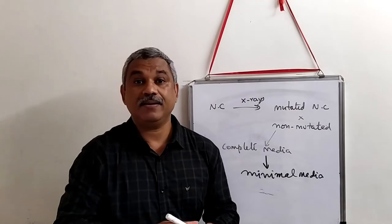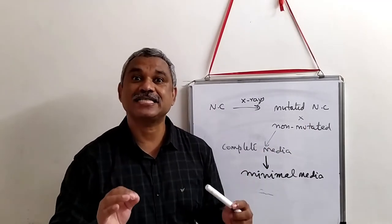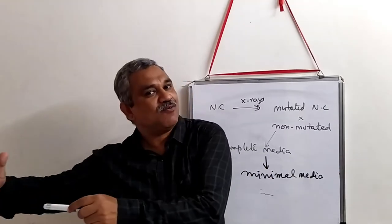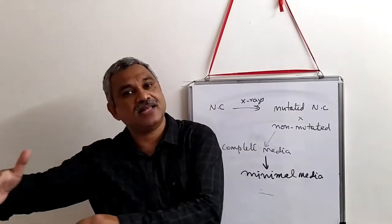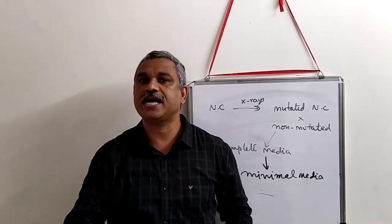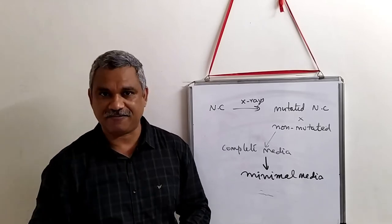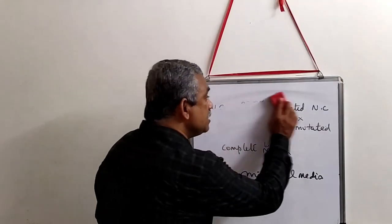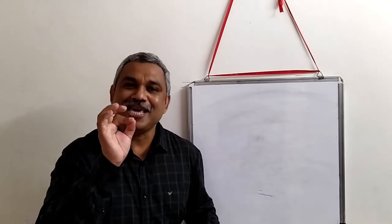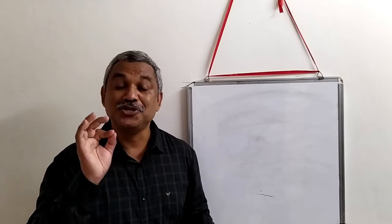When growing on complete media, they transferred the colonies into a minimal media. Minimal media will not have amino acids and they removed all the vitamins except biotin. They created two sets: one with vitamins, another without amino acids. They found the one without amino acids cannot survive at all, so they drew the conclusion that amino acid is playing a crucial role. From the minimal media, they introduced each of the 20 amino acids one after the other to find out which amino acid is essential for Neurospora crassa to survive. They discovered it is arginine.